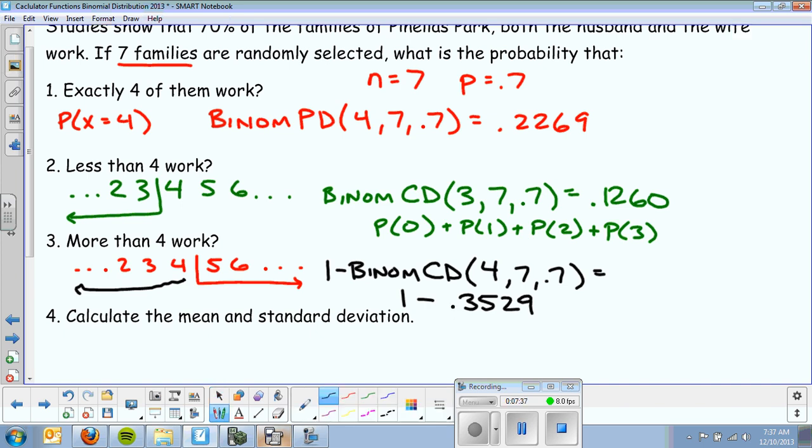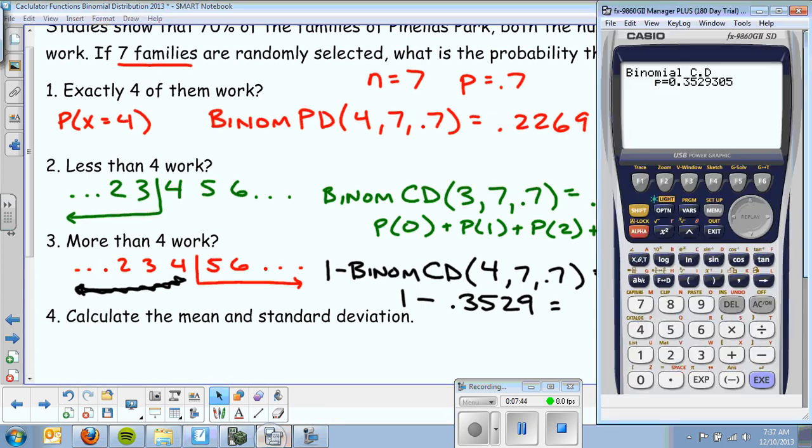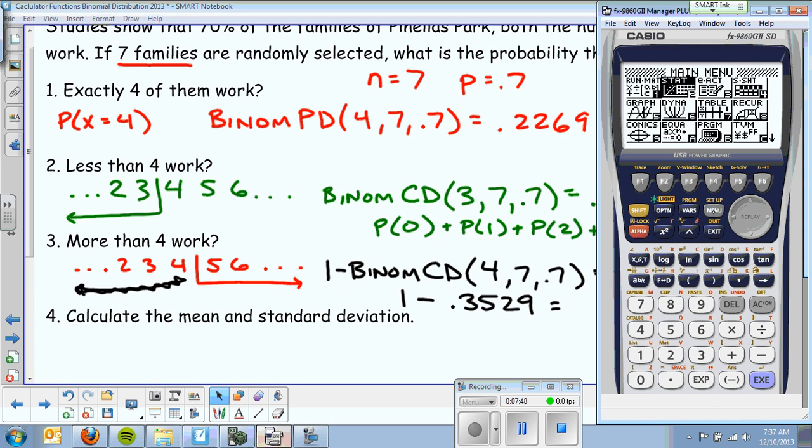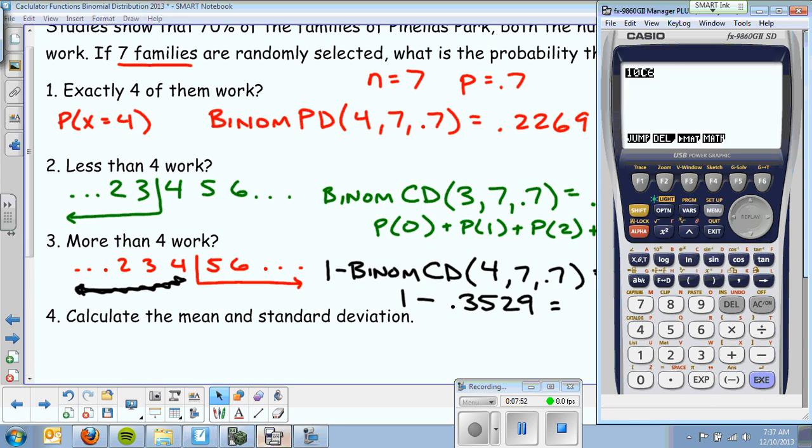That's again, this area here. That's the area to the left, 4 and to the left. I want the other part, so I subtract it from 1. And I'm going to do 1 minus 0.3529 and get 0.6471.